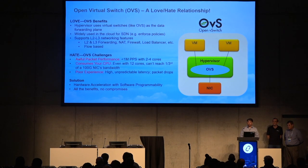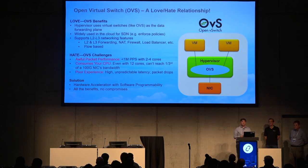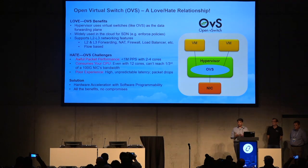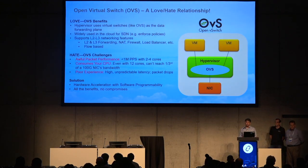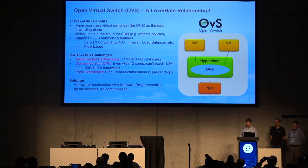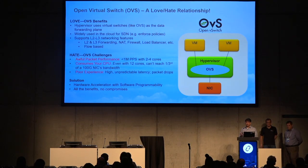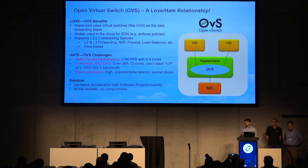One key component here is Open vSwitch, a very popular virtual switch in the OpenStack world — it's part of the hypervisor. Although OVS is massively deployed, it has performance issues. You can get less than one million packets per second dedicating two to four cores, it consumes a lot of CPU, and with 12 cores you can only get up to 30 gigabits of throughput — just one third of a 100-gig link. You get poor latency and poor user experience.